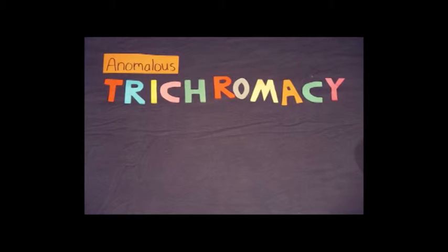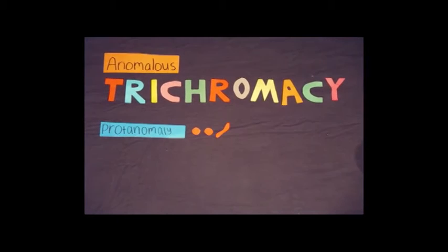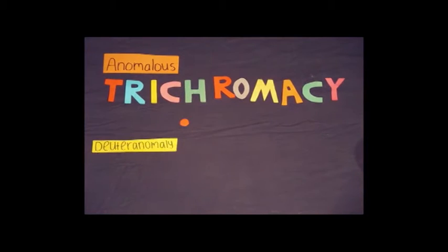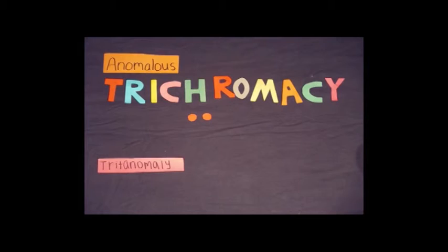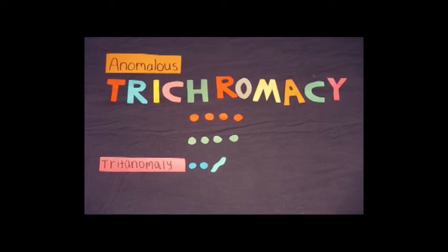There are three types of anomalous trichromacy. If you have some faulty or missing red cones, this is called protanomaly. Some faulty or missing green cones is called deuteranomaly, and some faulty or missing blue cones is called tritanomaly.